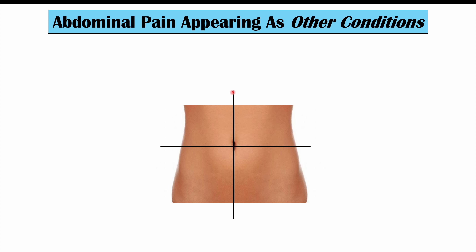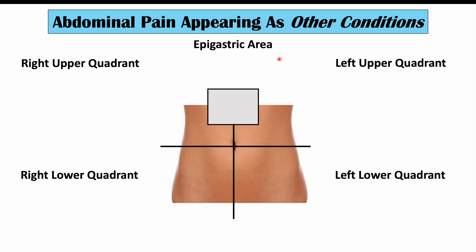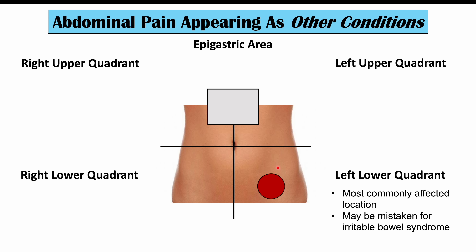The best way to look at abdominal pain is by breaking the abdomen into four quadrants using the umbilicus, or belly button, as the center point — with a horizontal and vertical line through it. We get the right upper quadrant, left upper quadrant, right lower quadrant, and left lower quadrant. Pain in the left lower quadrant is the most commonly affected location in diverticulitis, because there can be a lot of diverticula in and around the sigmoid colon. However, this pain can be mistaken for irritable bowel syndrome, especially when diarrhea is also present.